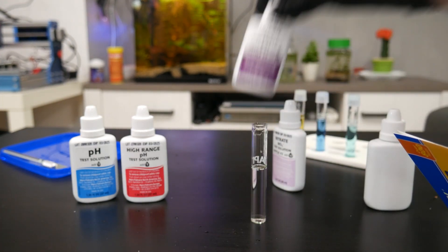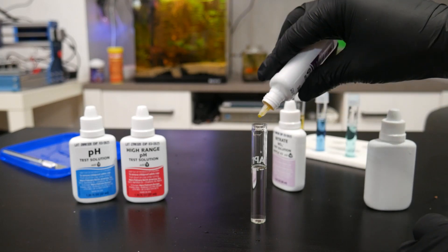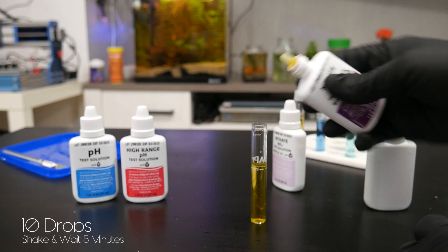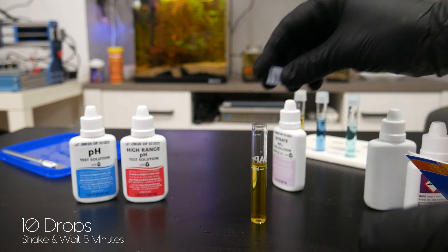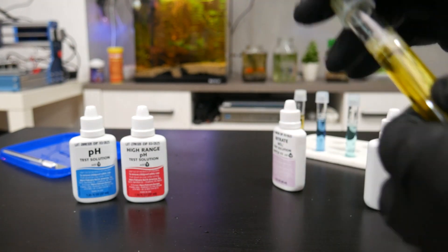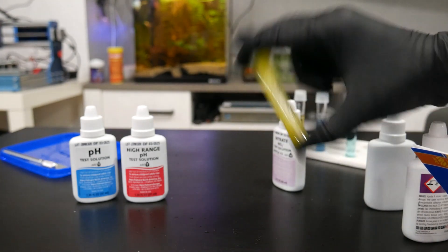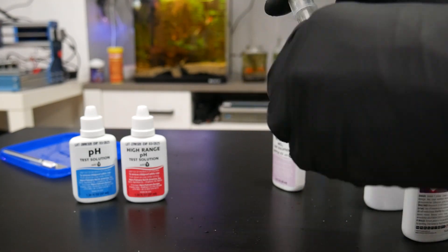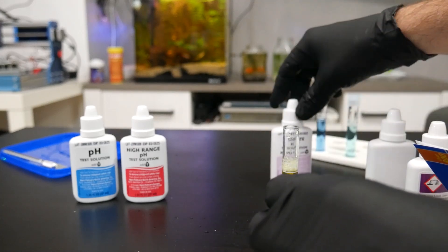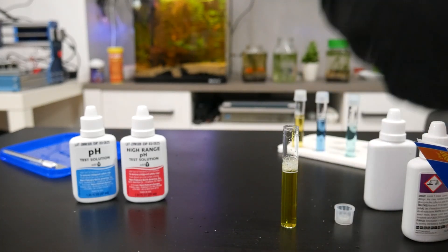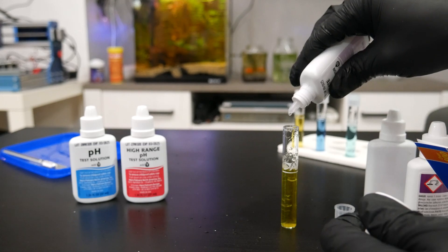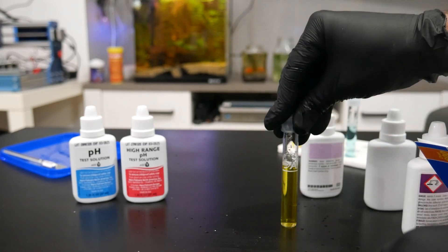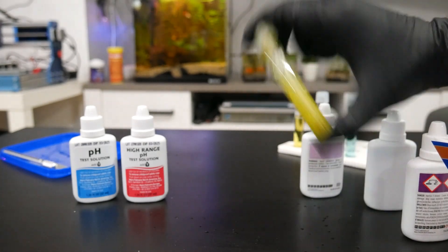The next test is nitrate. We need ten drops from the first bottle. Then we need to shake vigorously for thirty seconds. Now we need to add more ten drops from the second bottle and shake it for one minute.